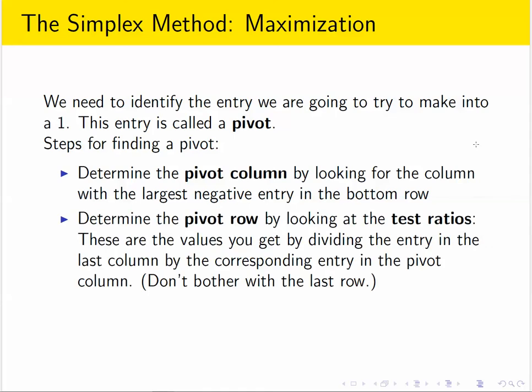Then you look at the earlier rows, and you calculate what we call test ratios. To get the test ratio, you do a division. You take the entry in the last column, divided by the corresponding entry in the pivot column. Those are the test ratios.